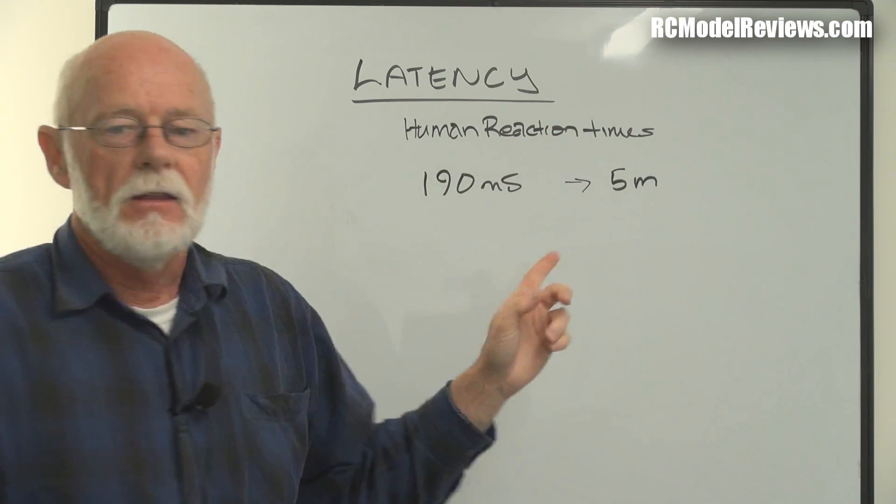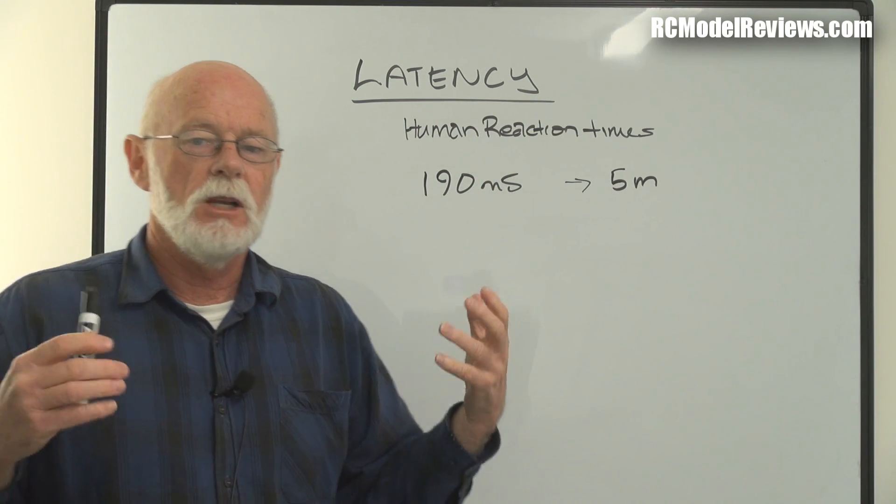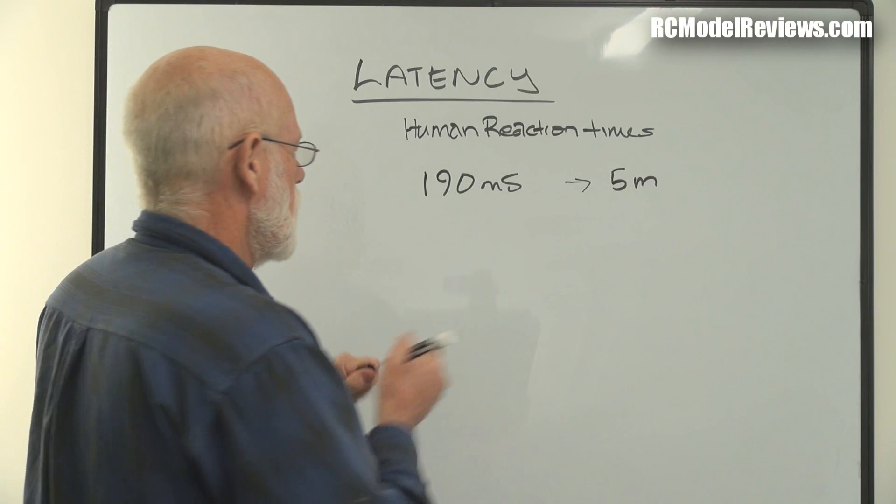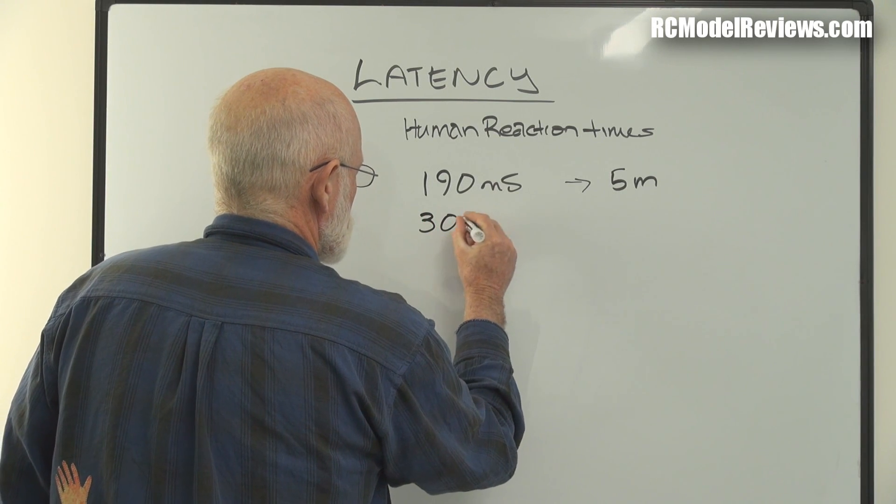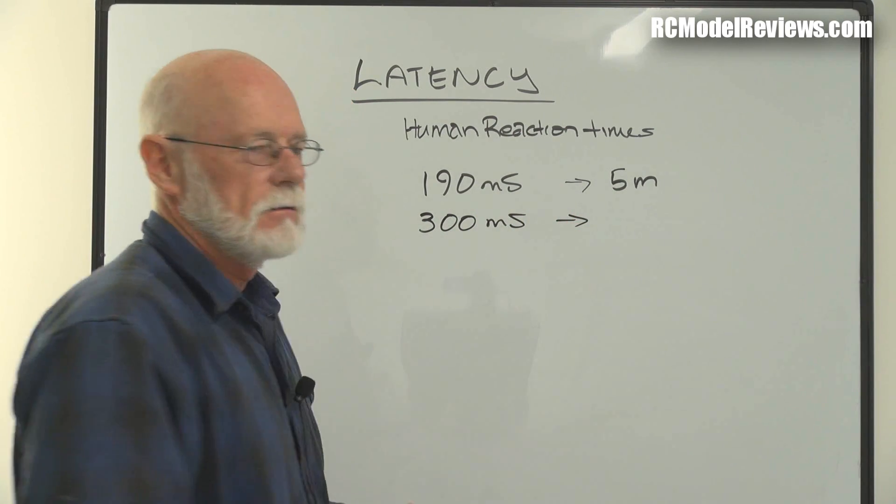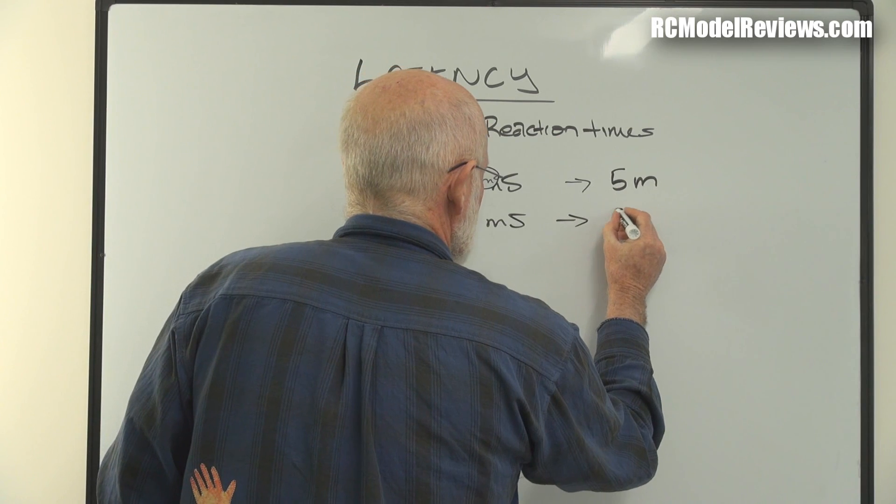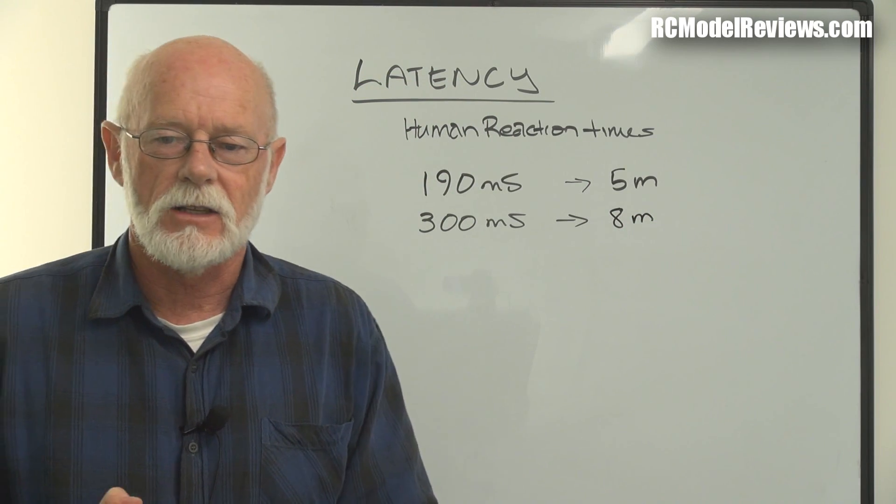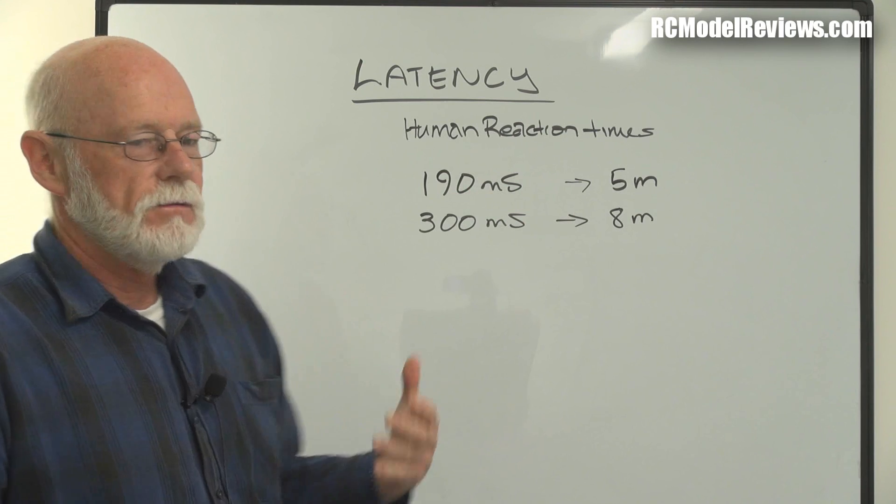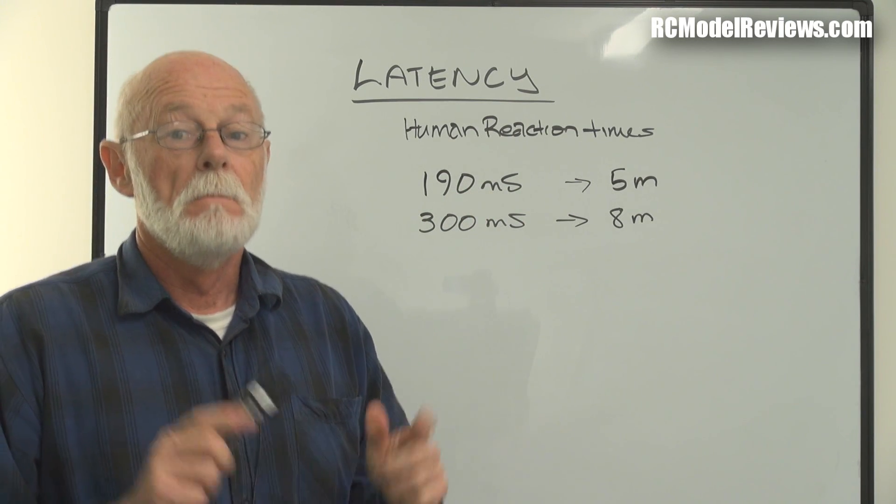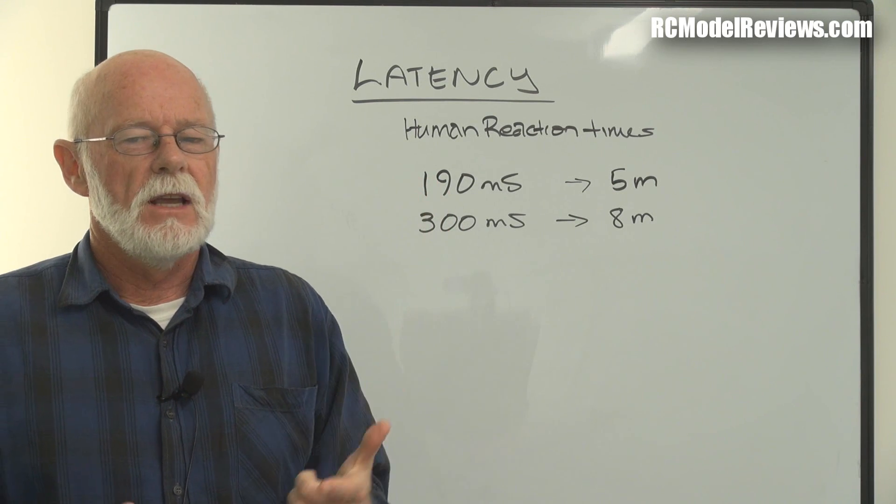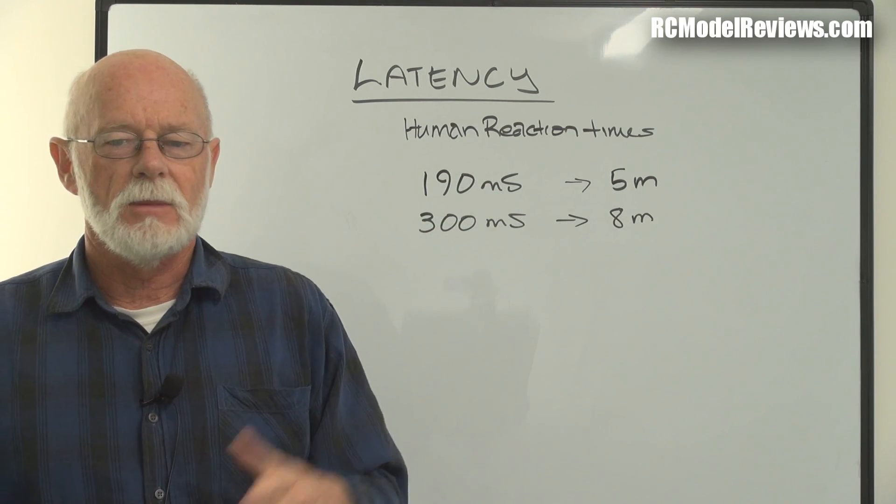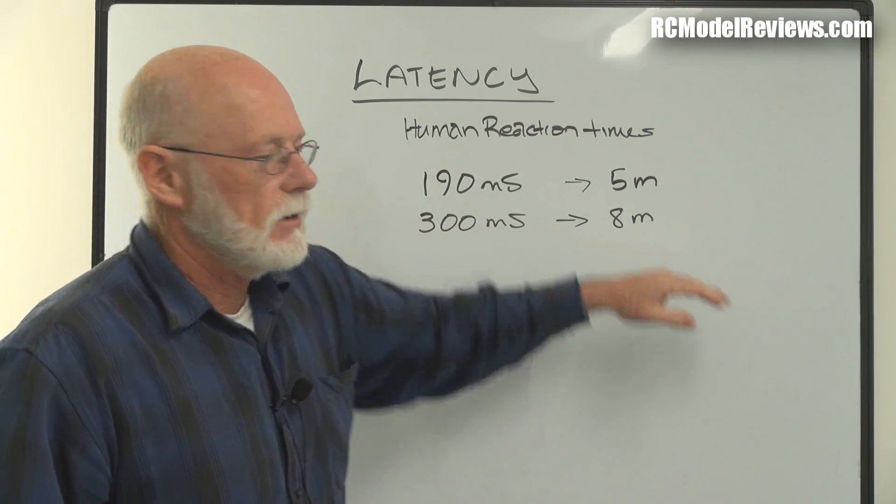At the other end of the spectrum, you've got old codgers like me. My reaction time, I had to use a calendar. But normally fit human beings, it's about 300 milliseconds, closer to the average reaction time. In that time your quad would have traveled about eight meters. So again, that 1.25 meters of latency doesn't mean a hell of a lot when you compare it to the actual reaction times. 45 milliseconds, I don't think it's going to make a lot of difference to most quad fliers.